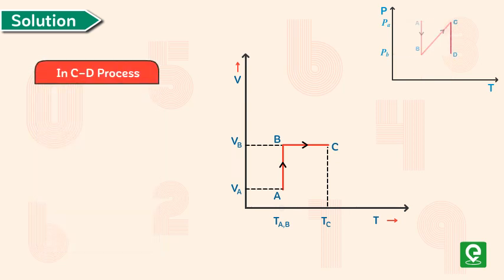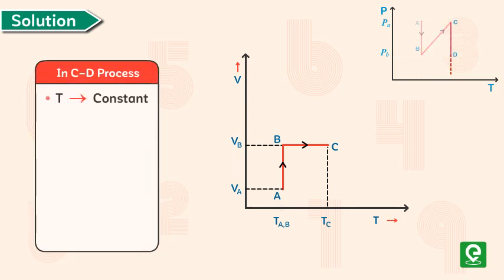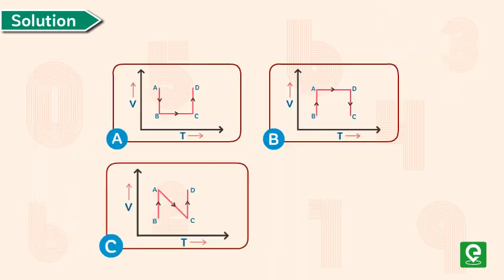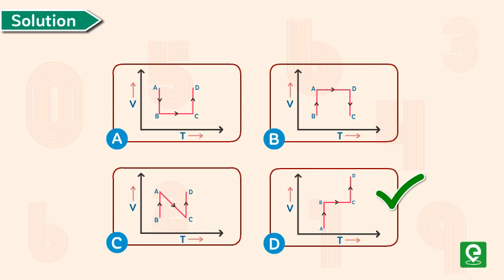Now in CD process, temperature is constant and pressure is decreasing. So from ideal gas equation, we can deduce that volume increases from C to D. Hence, option D is the correct answer.